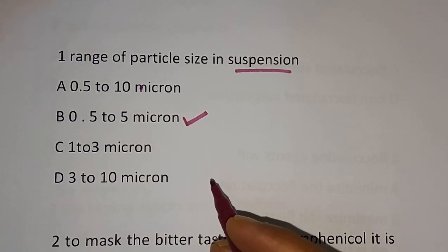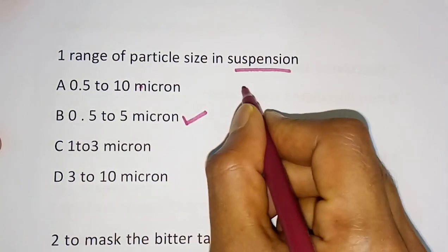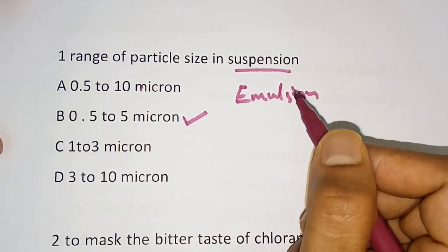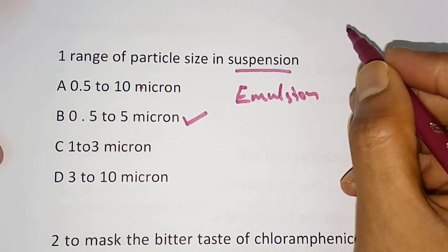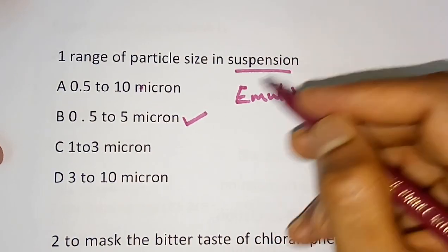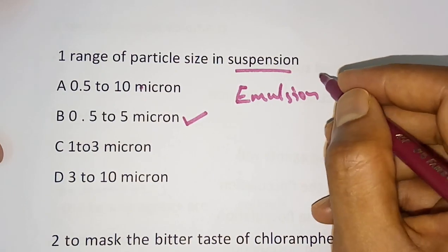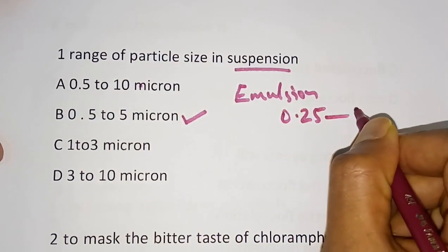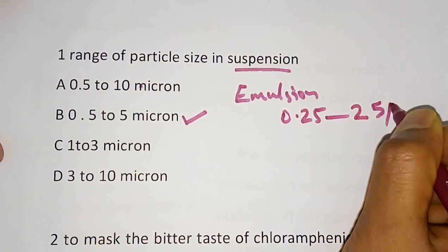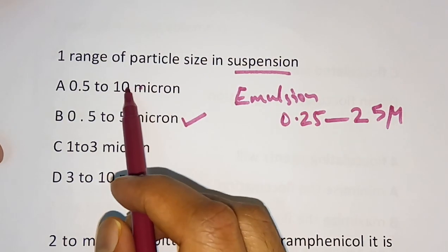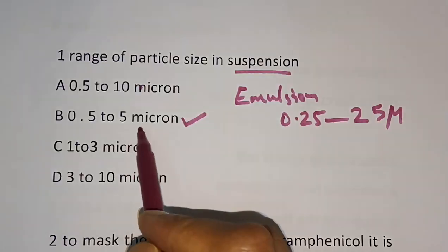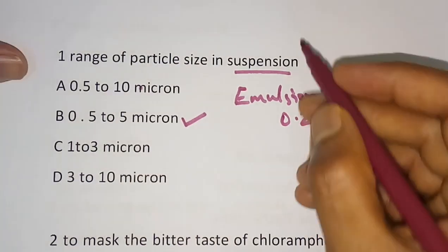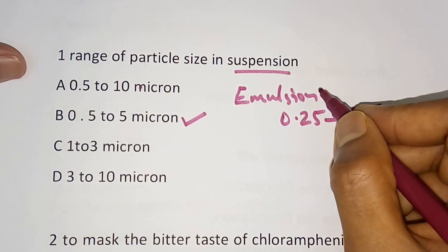Now we study the range of particle size but in emulsion. In emulsion, it's actually the size of globule. In suspension, solids are mixed in liquids. But in emulsion, two liquids are mixed in each other. In emulsion, the globule size ranges from 0.25 to 25 micron, while in suspension the particle size is 0.5 to 5 micron.